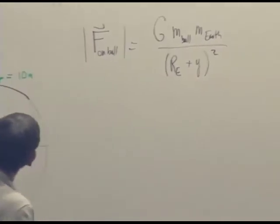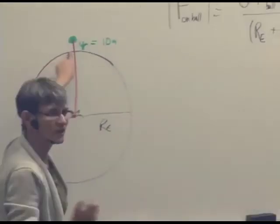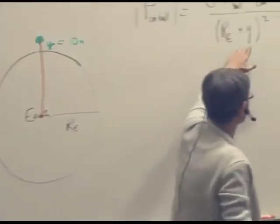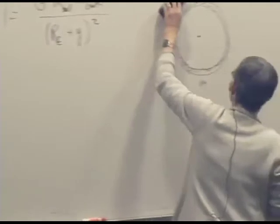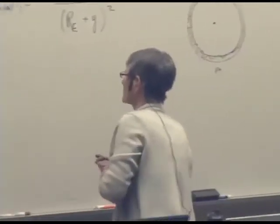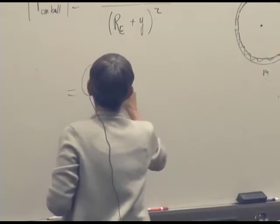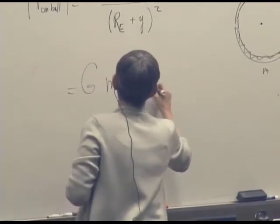And if the ball were actually just sitting on the Earth, then that would be radius of the Earth plus zero squared. But let's see what this number is going to look like. We're going to have G, mass of the ball, mass of the Earth.